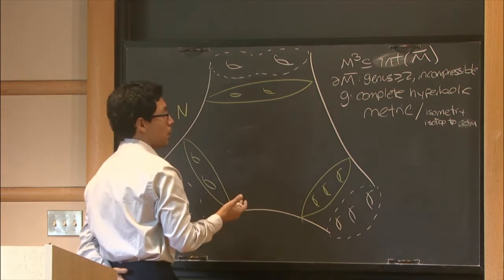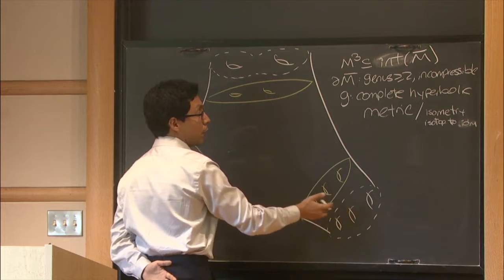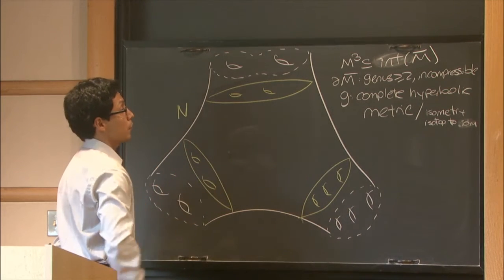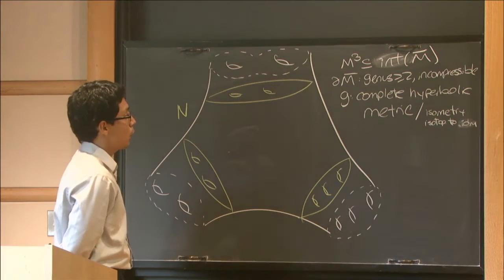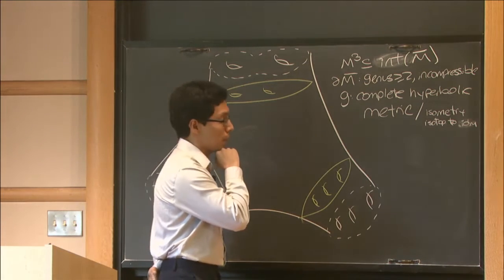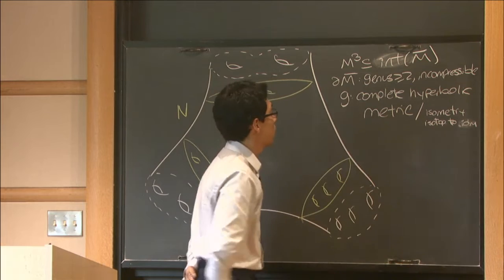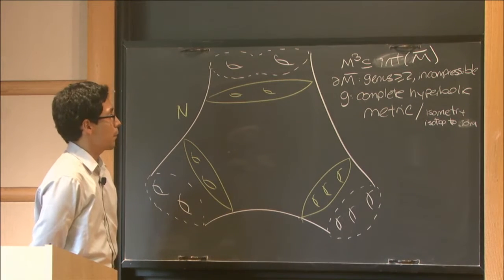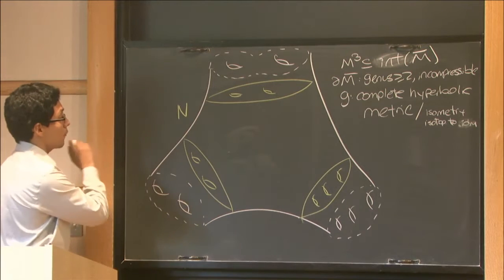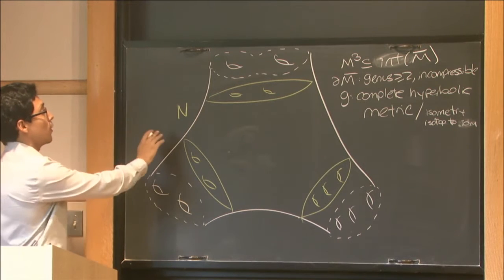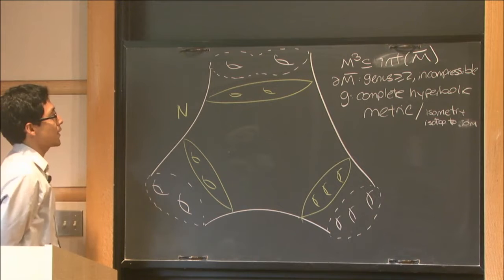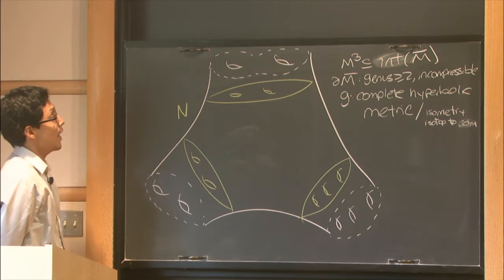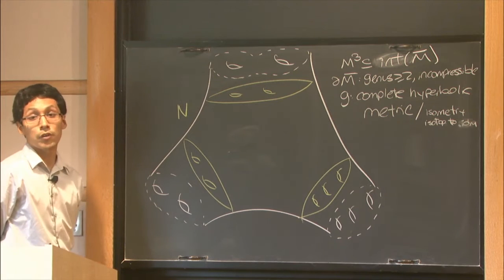that the boundary is incompressible, meaning if a curve from the boundary was trivial in the whole object, it will be trivial within the surface to begin with. And I will be interested in complete hyperbolic metrics in this subject up to isotopy. And more than just any complete hyperbolic metric, I will be interested in the one for which the following is true. We should be able to find a subset N whose boundary is going to be convex and whose inclusion is isotopic to the full thing.